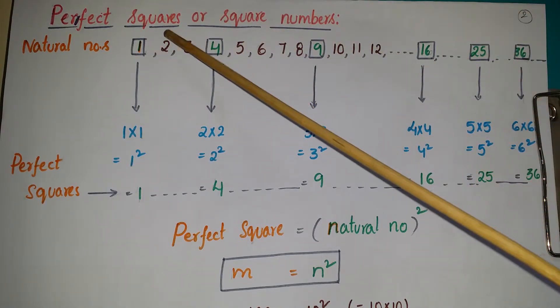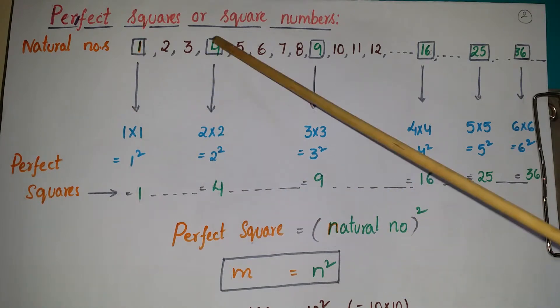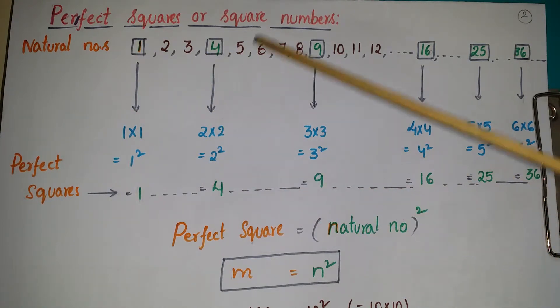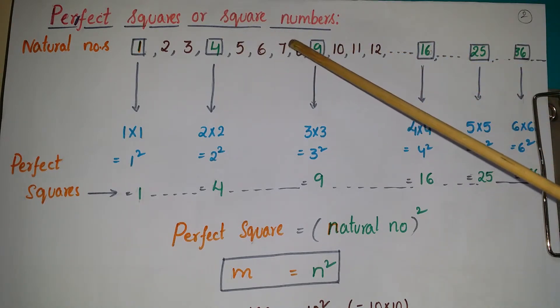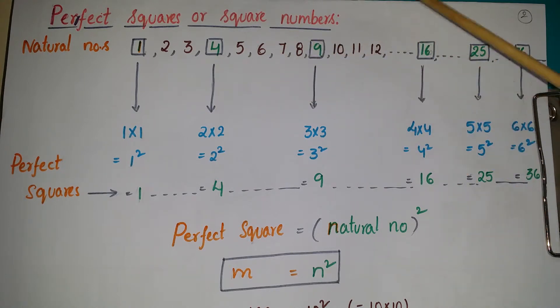From these natural numbers, some numbers—1 we can write as 1 into 1, 4 we can write as 2 into 2, 9 we can write as 3 into 3, and 16 we can write as 4 into 4. So these numbers—1, 4, 9, 16, 25, 36—are called perfect squares or square numbers.